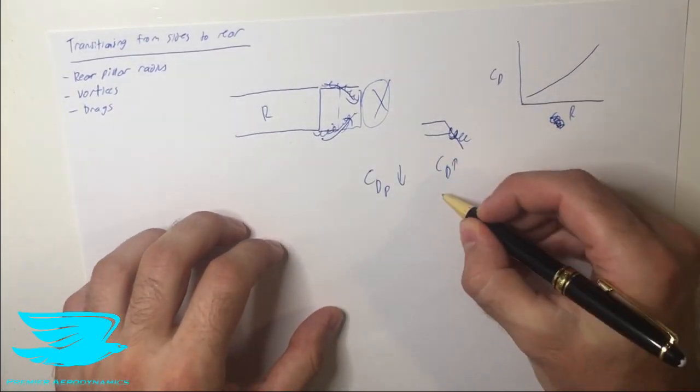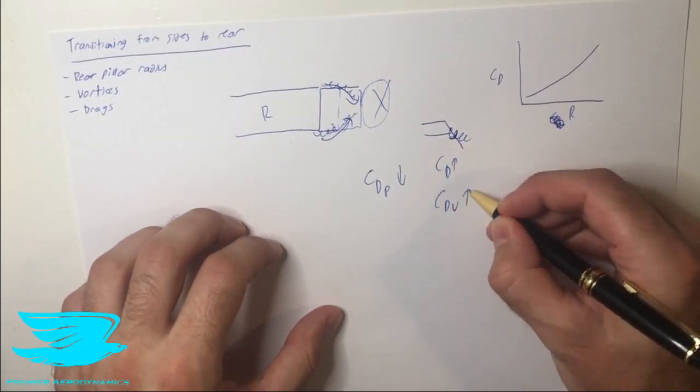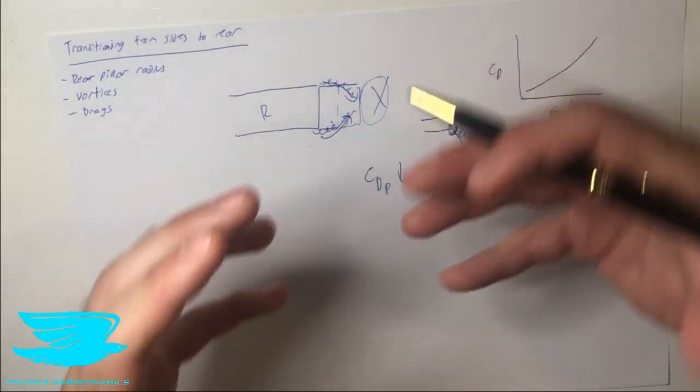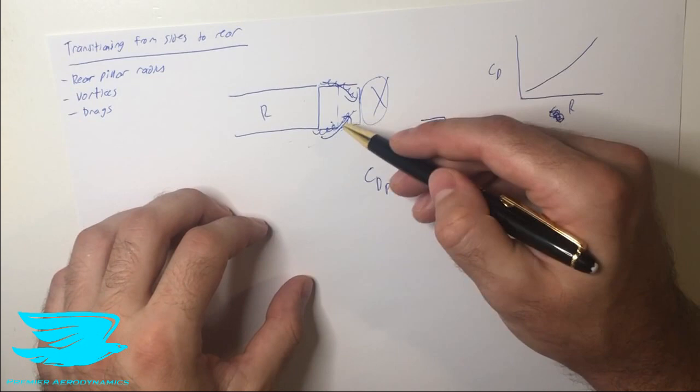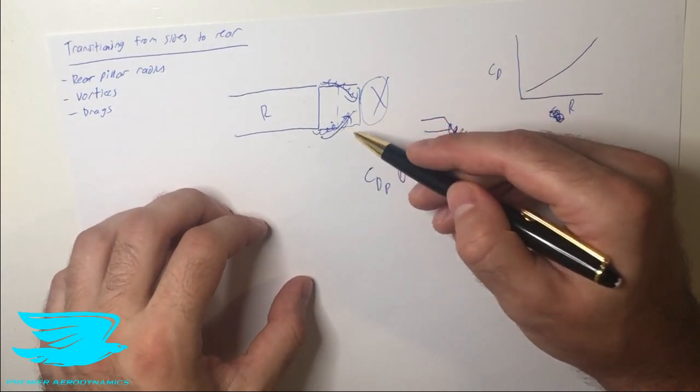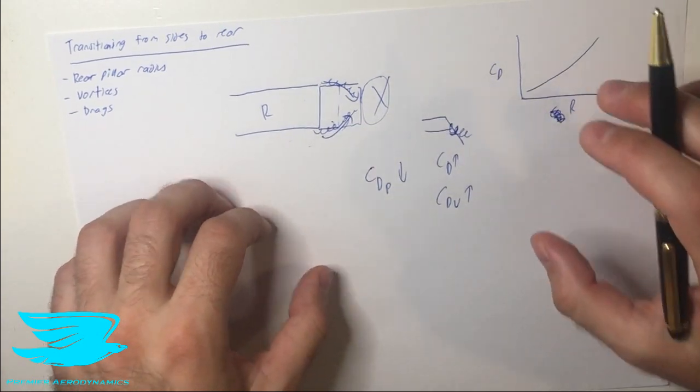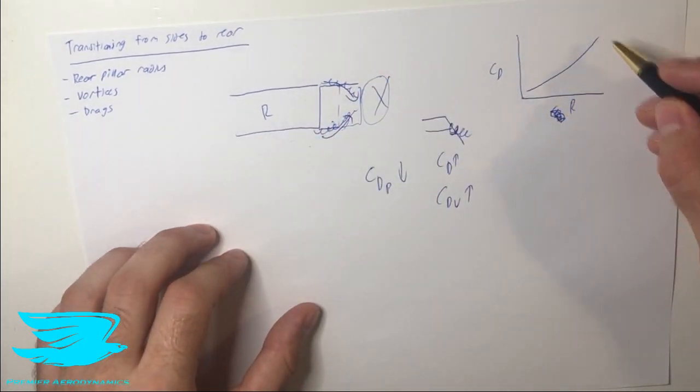And the reason why is because of the vortex drag. The vortex drag skyrockets because we have flow coming along here. These vortices are not only continuing, they're not only propagating downstream, they may even be growing in strength. So if they grow in strength, the vortex drag will increase. That's why we get an increase in the drag as the radius of curvature starts to increase.